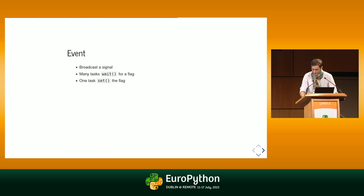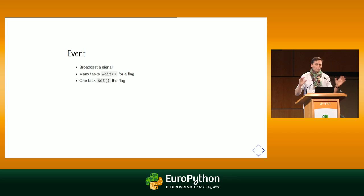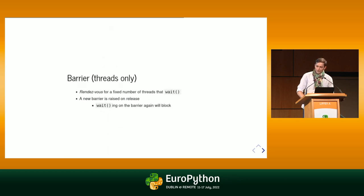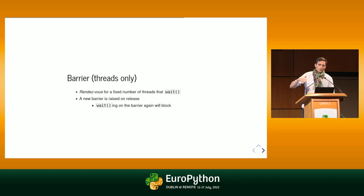The event can be seen as a signal that one thread broadcasts to many threads that are listening for it — basically it's just flag propagation. The condition is linked to lock, event, and predicate — I won't go into too much detail, but it's a useful construct in Python. Barriers — which are available in threads but not in AsyncIO — can be seen as a checkpoint where you specify how many threads must reach that barrier, and once everybody is there, you let them all go.